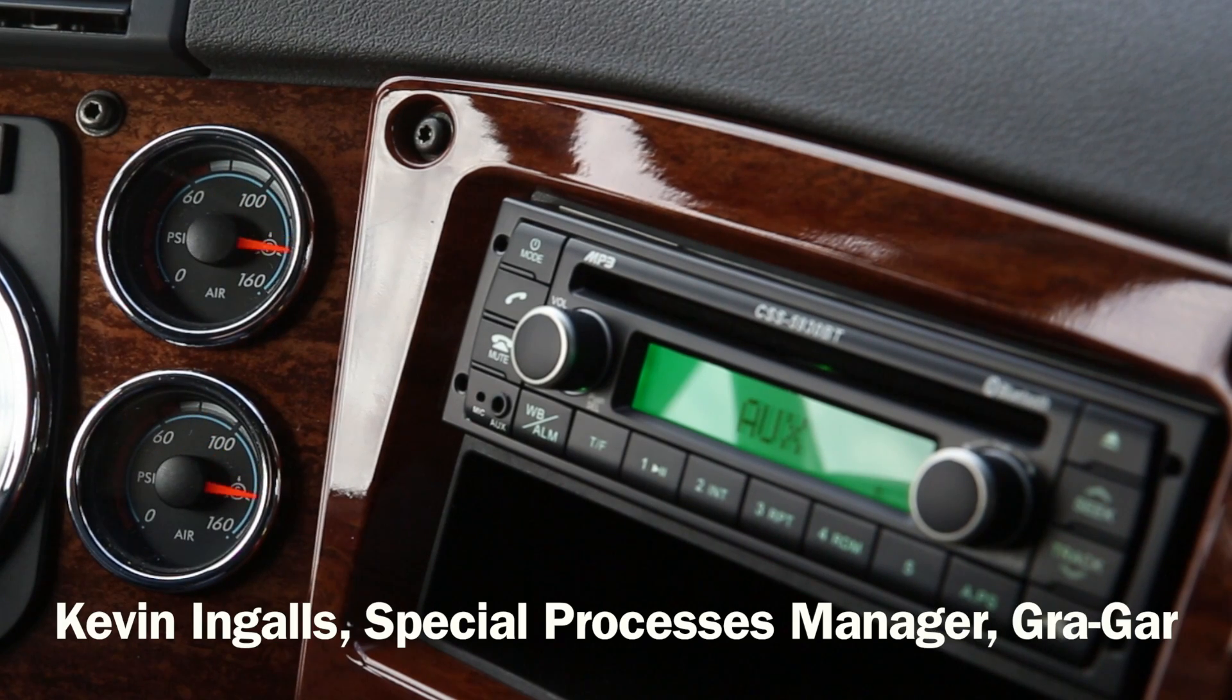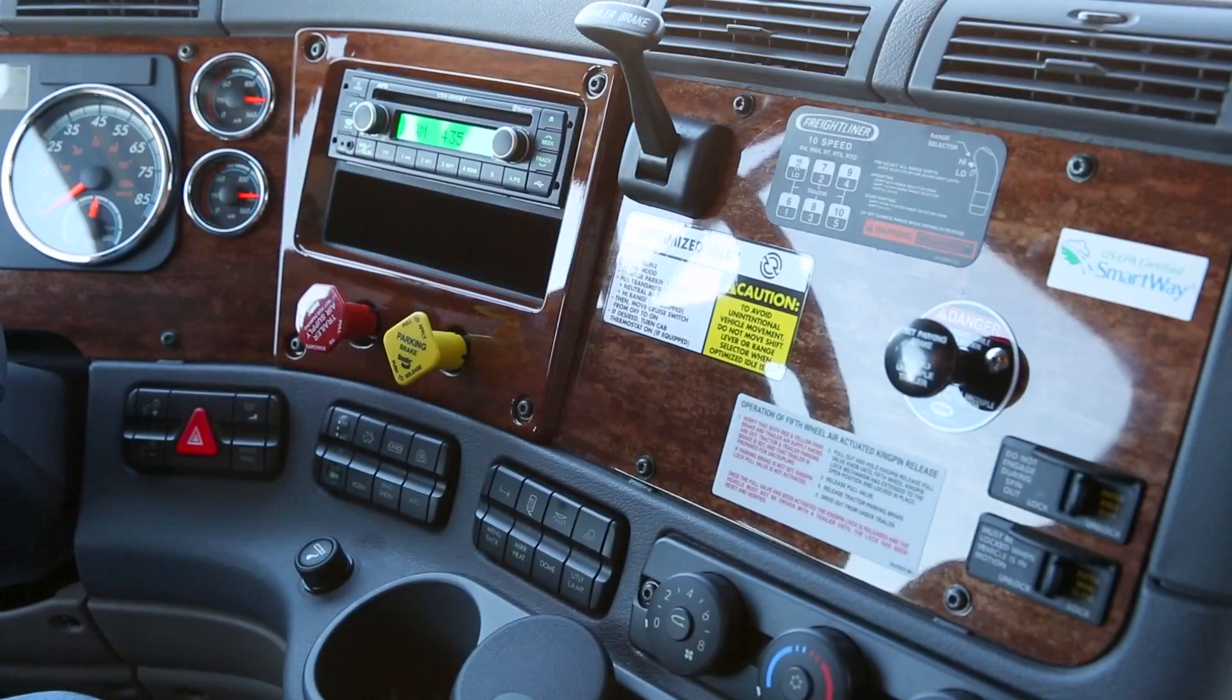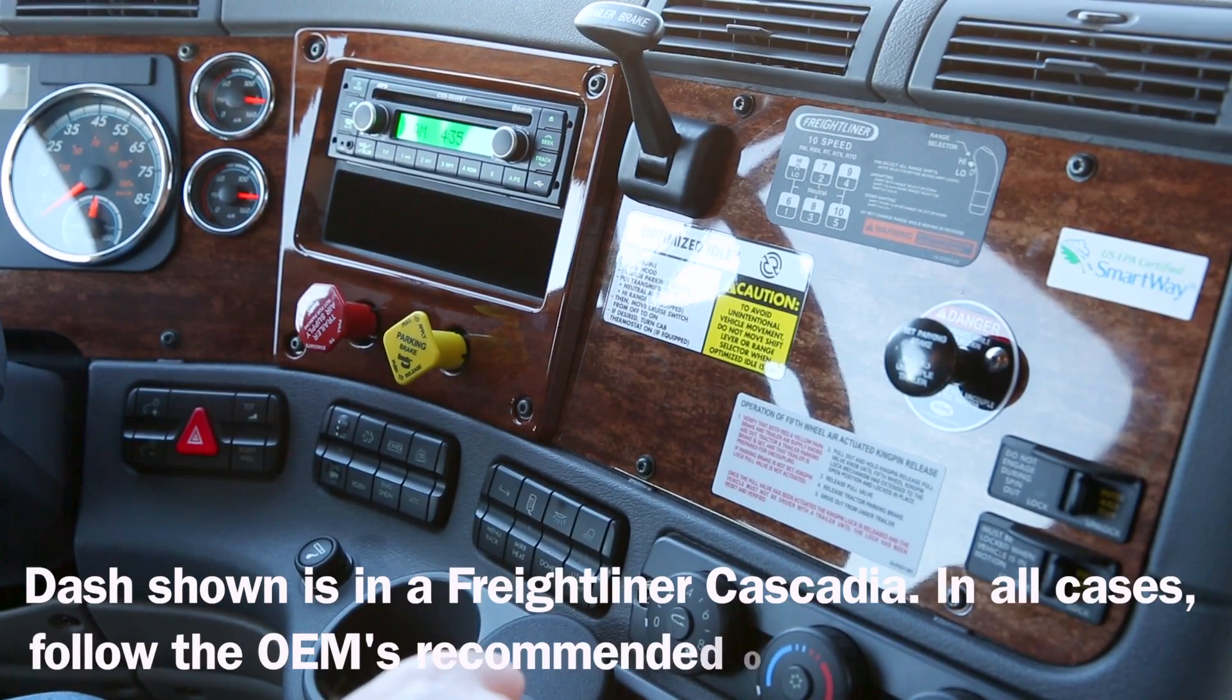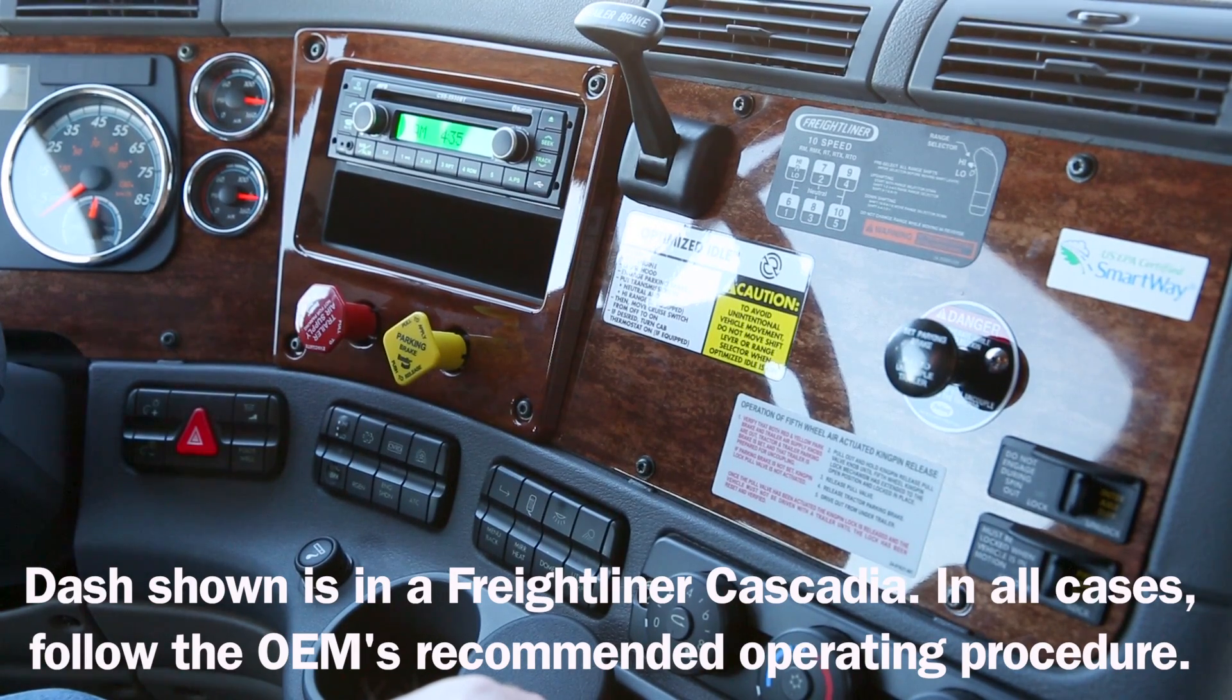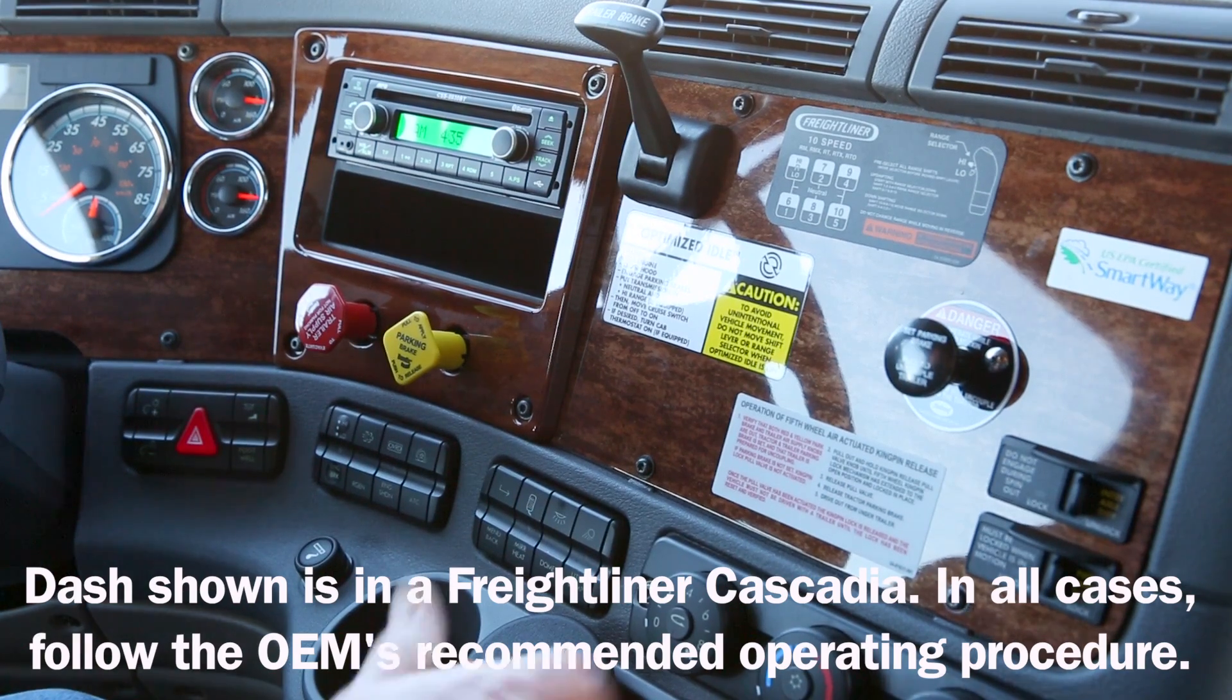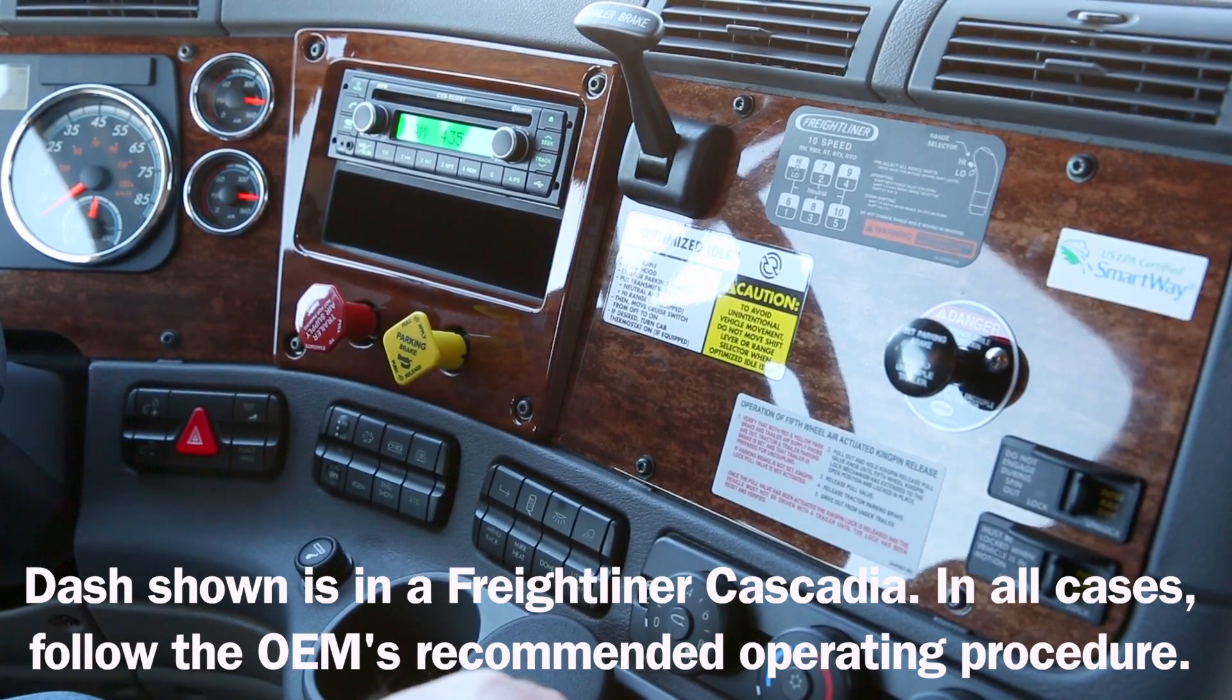For the Jost air-operated fifth wheel release to work, you must have at least 90 psi of air available. We're going to show you how to disconnect the tractor from the trailer using the Jost air-operated fifth wheel release. Right now, our dolly legs are set, our air lines and electrical cord are properly stowed to the tender, and now we're ready to unlatch the fifth wheel and pull away from the trailer.